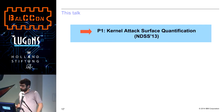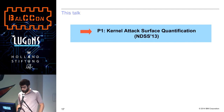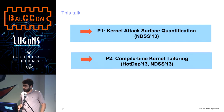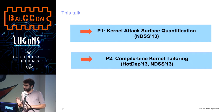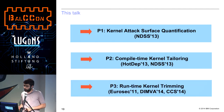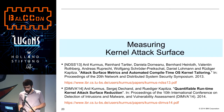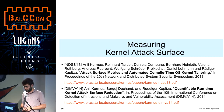In this talk, there will be three parts. The first part is about the quantification of the kernel attack surface, published at NDSS in 2013. The second part is about a method we've developed at compile time to tailor a kernel that corresponds to exactly the features you need. And the third part is doing essentially the same thing, but without needing to recompile the kernel. So let's start with the first part: measuring the kernel attack surface.